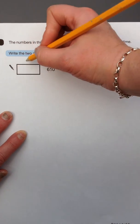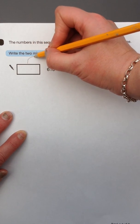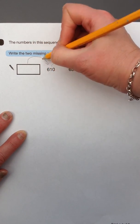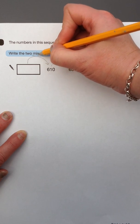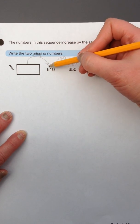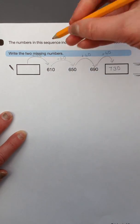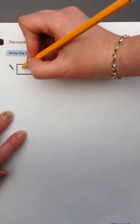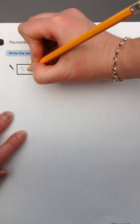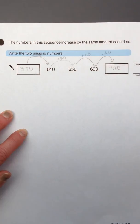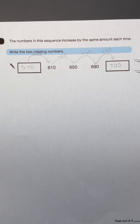This one, 40 has been added to that missing number to get 610. So in reverse, 40 has been subtracted from 610, which means that one is 570.